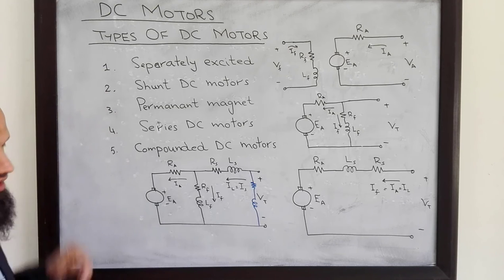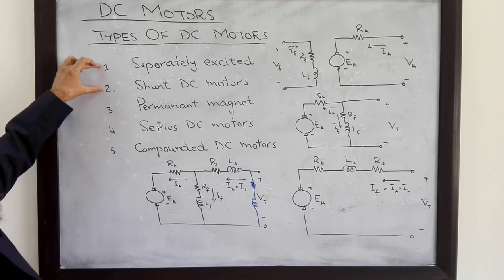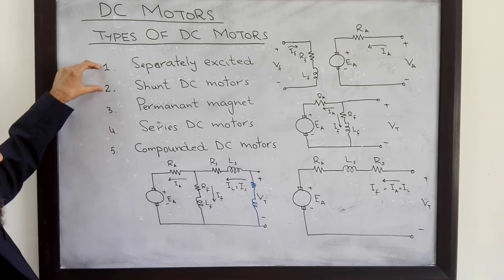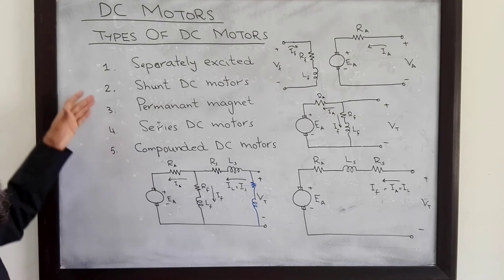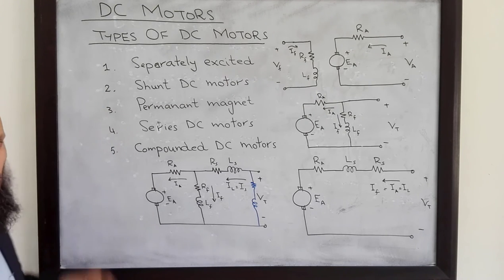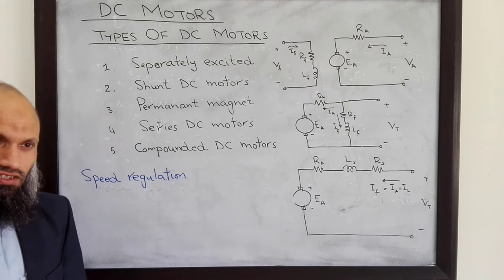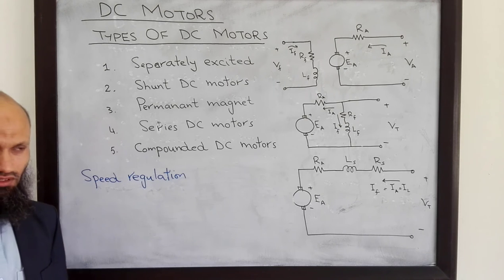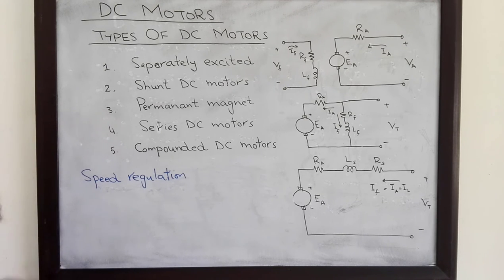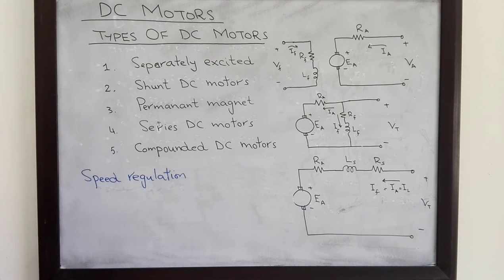So these are the different variations of DC motors. We shall discuss separately excited and shunt DC motors in more detail, and if time permits, we shall cover series and compounded DC motors at the end of the course. One important use of DC motors is in speed control of different physical systems, and therefore the performance of different types can be compared using a parameter called speed regulation.